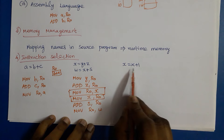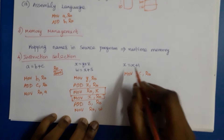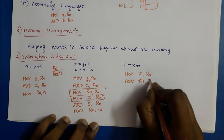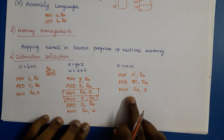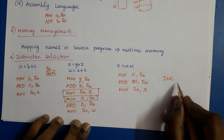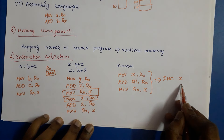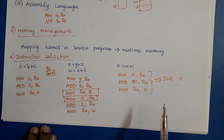In the third example, for 'x = x + 1', the naive code sequence would be: MOV x, R0; ADD #1, R0; MOV R0, x. However, if the target machine has an increment instruction, we can simply use INC x instead of these three statements, reducing the number of instructions. This shows that instruction selection is an important criterion in code generation.